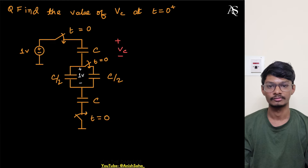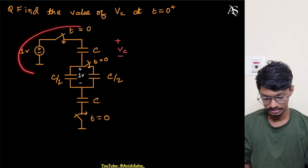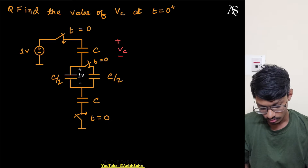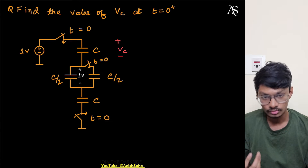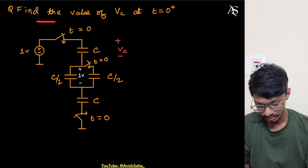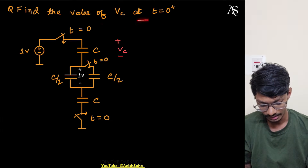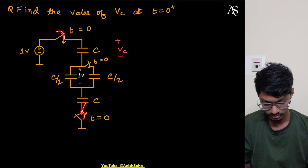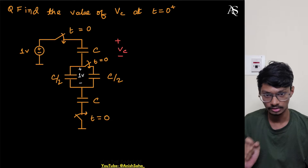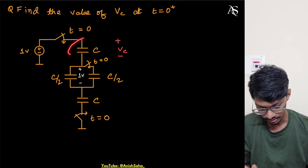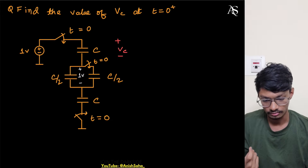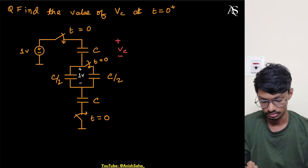Hello everyone, I'm Anish and welcome to my YouTube channel. Today we'll solve this interesting question on switched capacitors. The question asks us to find the value of the voltage Vc at t equals zero plus. The switches are closing at t equals zero and we have to find the voltage across this capacitor.